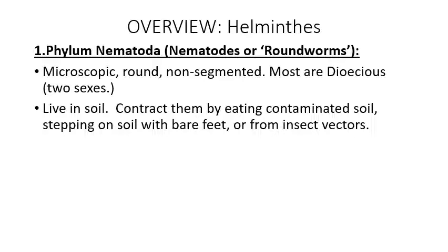The platyhelminths and nematodes together are grouped as helminths — the two phyla of worms that contain members sometimes dangerous to humans, sometimes helpful, and most often just neutral. Phylum Nematoda contains microscopic round non-segmented worms. Most are dioecious, meaning there are two sexes — male and female. Some are monoecious.